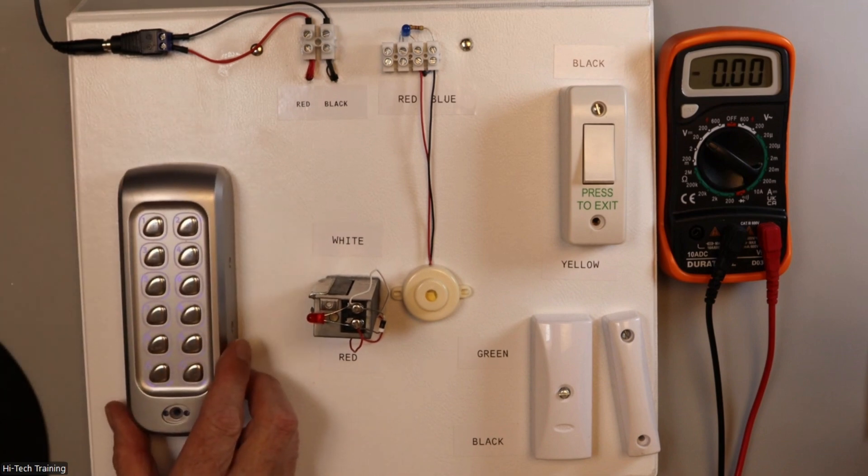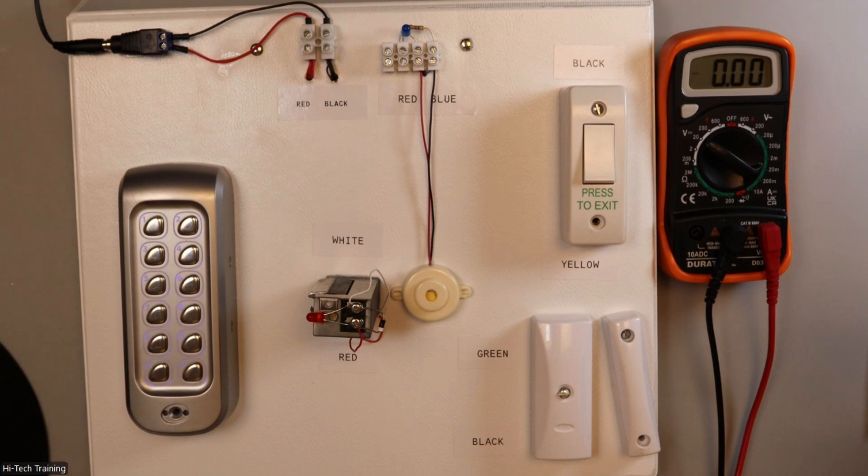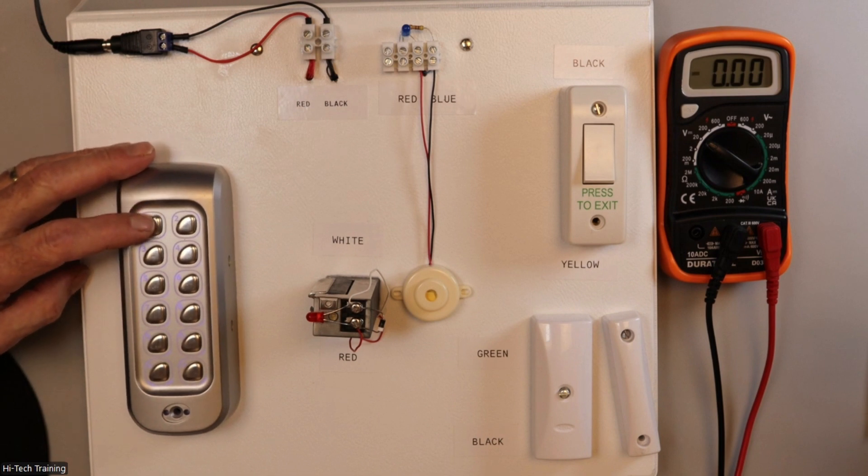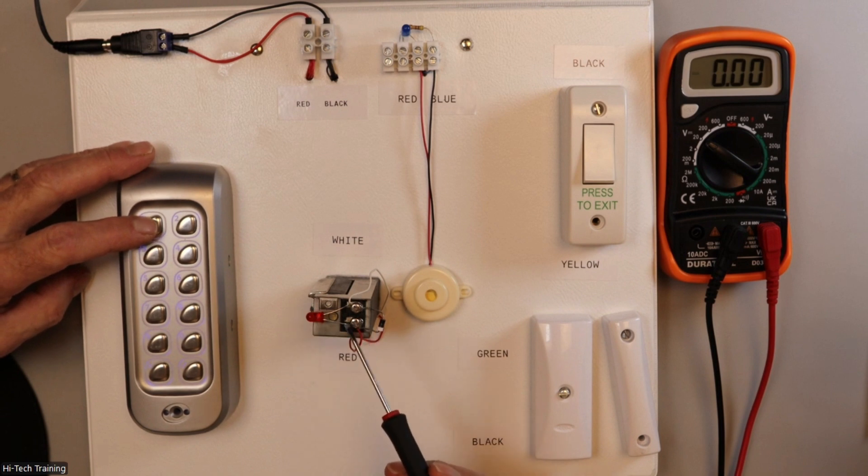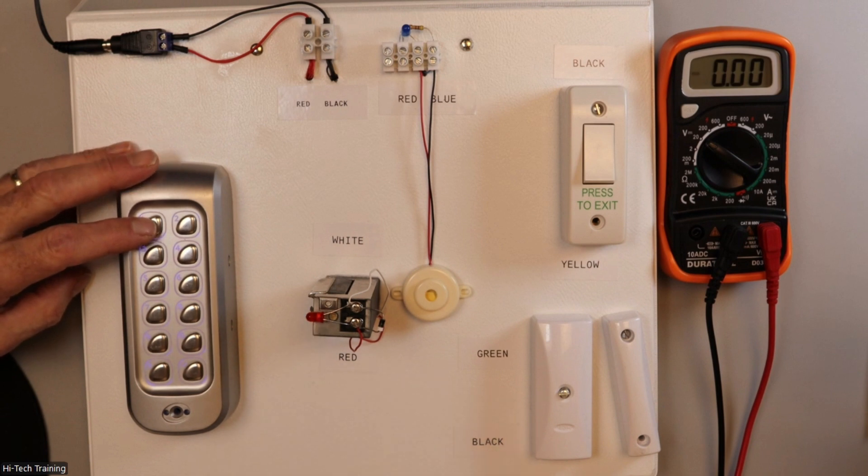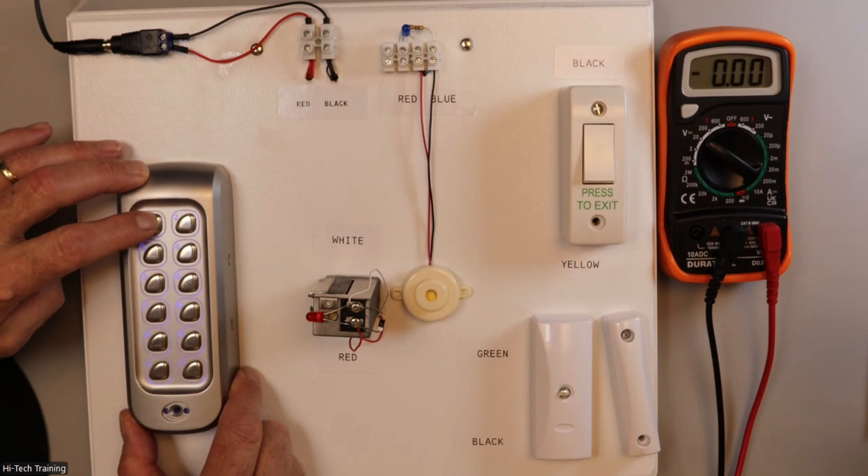So we've defaulted this system. That means we've made it the same as when you buy a brand new system. The default code for this particular keypad unit is 1111. So if I press 1111, it should operate our electric strike lock here, and we have a little LED indicator here coming on. So 1111, there you go.